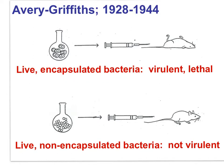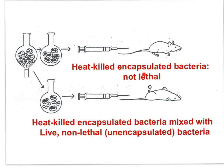Using live, encapsulated bacteria, they knew their bacteria were virulent and would kill a mouse. However, live, non-encapsulated bacteria were not virulent and could not kill a mouse. For the bacteria, the encapsulation was protective against mouse defenses, allowing the encapsulated bacteria to be virulent. When they heat-killed virulent, encapsulated bacteria and injected it into a mouse, the mouse lived. But when the heat-killed encapsulated bacteria were mixed with live, non-lethal, unencapsulated bacteria, the mouse died. In other words, the live, non-lethal, unencapsulated bacteria had changed — it had become lethal. It had picked up the virulent factor from the dead, heat-killed, encapsulated bacteria.